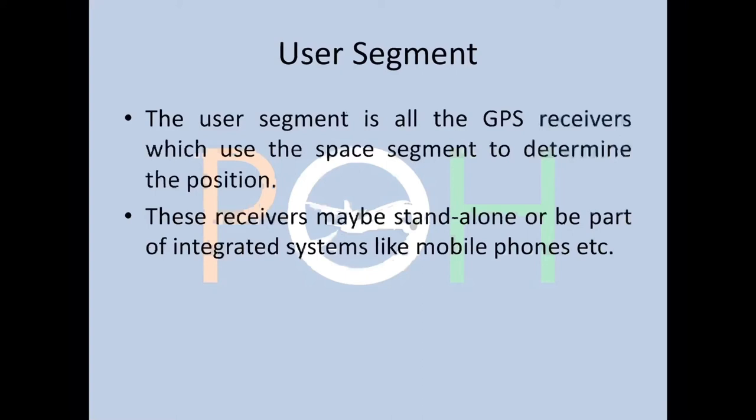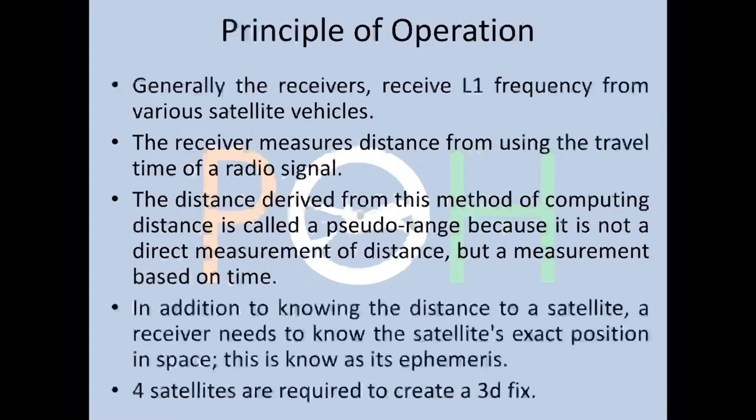The user segment consists of all the GPS receivers that use the space segment to determine position — your mobile phones, iPads, laptops, aircraft navigation systems, and so on. These receivers may be standalone or part of integrated systems.